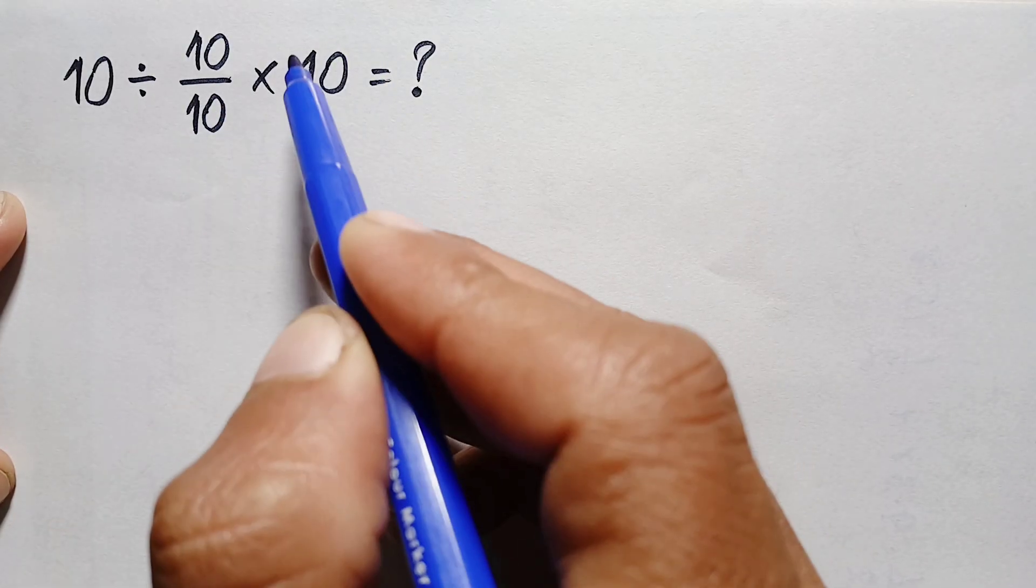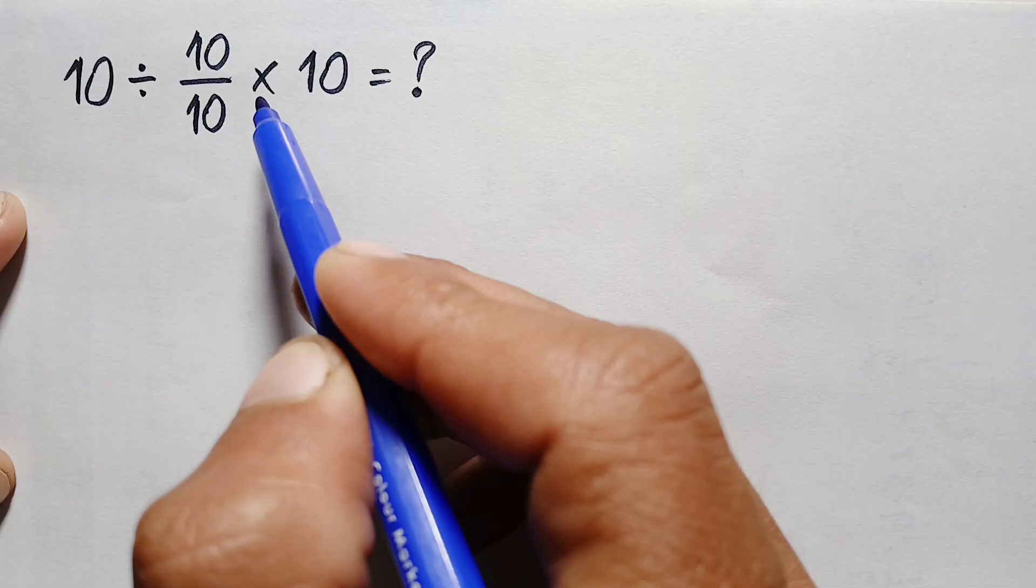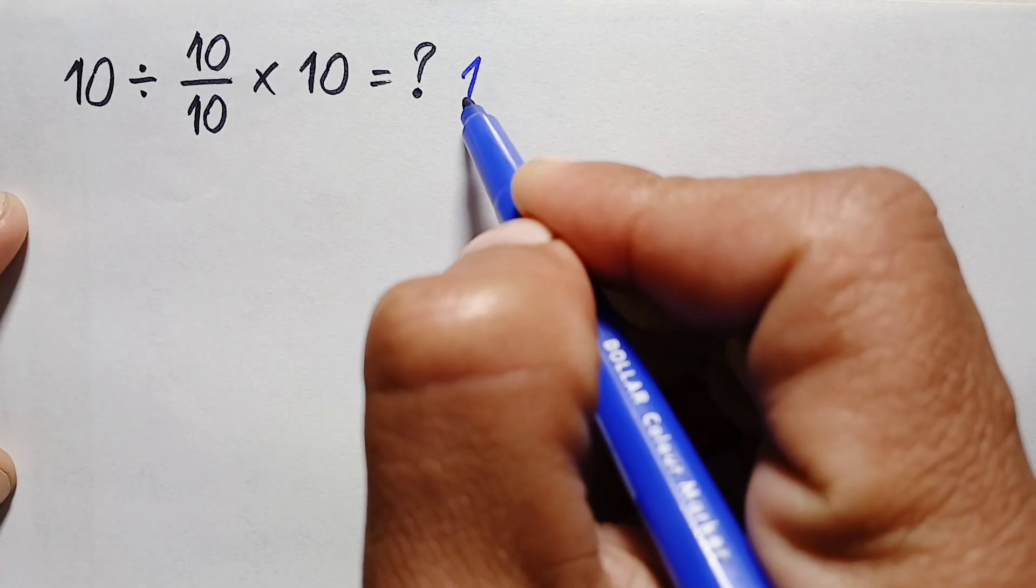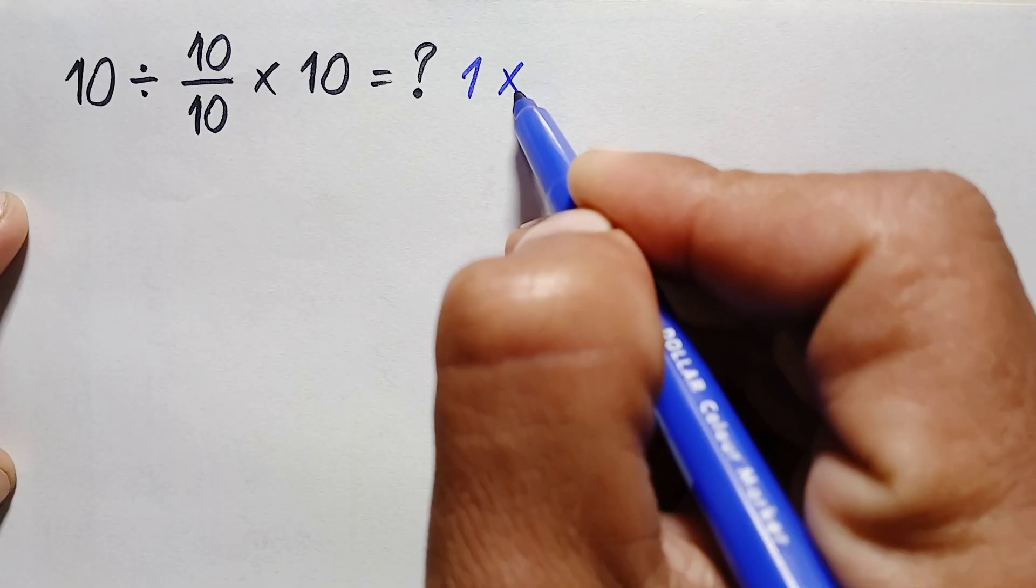If we cancel 10 with 10, this part of the number will become only 10, and dividing 10 by 10 gives us just 1, and 1 is our answer. But this answer is wrong.